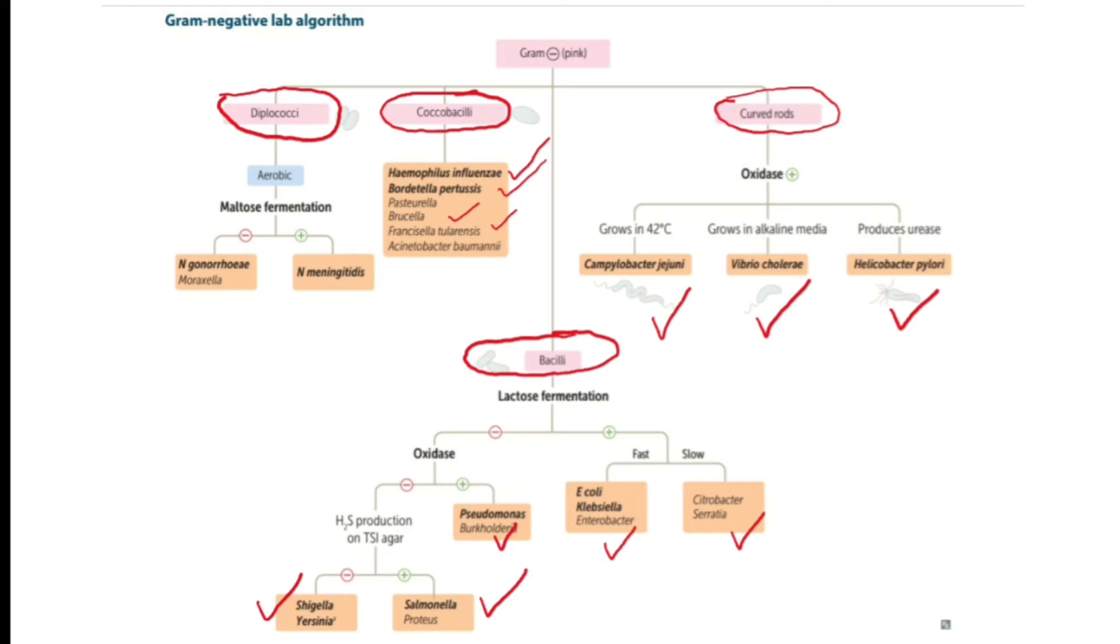The last group is diplococci, and usually they are aerobes. These are classified according to their ability to ferment maltose. Neisseria meningitidis can ferment maltose, but Neisseria gonorrhoeae cannot. Another one which is in the same class as Neisseria gonorrhoeae is Moraxella catarrhalis.